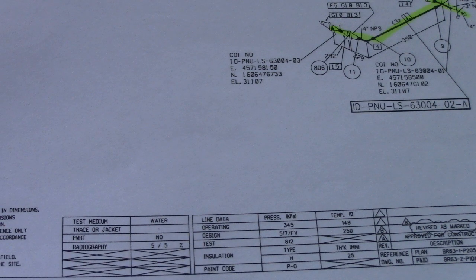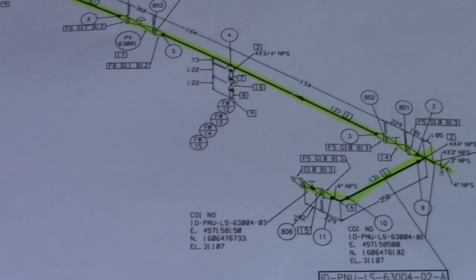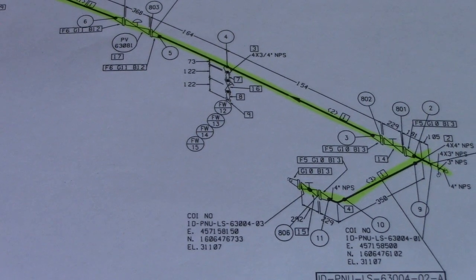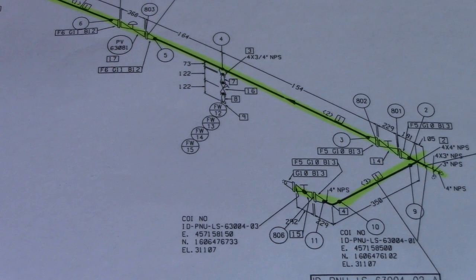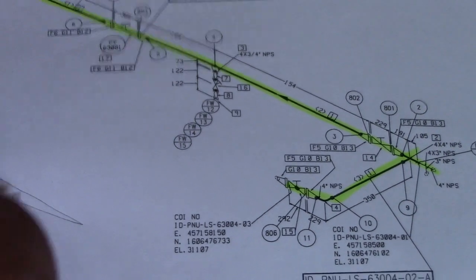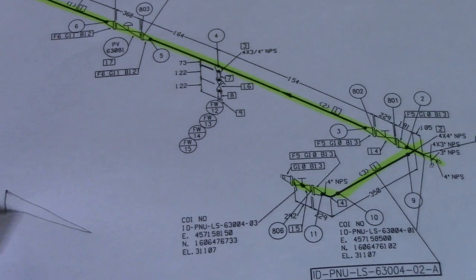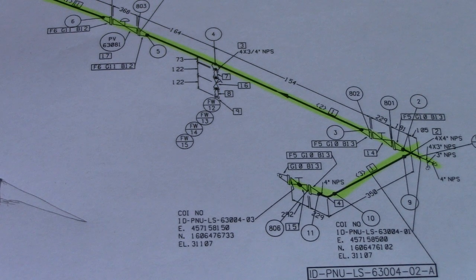Number thirteen is the P&ID number. You can see the P&ID number here — P&ID stands for Piping and Instrumentation Diagram. Number fourteen is slope. On this particular isometric drawing we don't have a slope, but on other isometric drawings you will see a triangle symbol indicating the slope and its percentage.